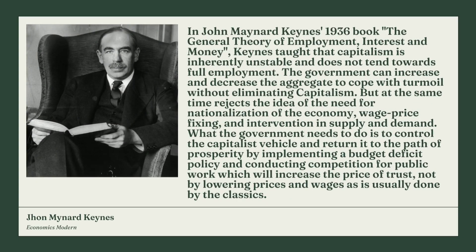In John Maynard Keynes' 1936 book, The General Theory of Employment, Interest and Money, Keynes argued that capitalism is inherently unstable and does not tend towards full employment. The government can increase and decrease aggregate demand to cope with turmoil without eliminating capitalism, but at the same time rejects the need for nationalization of the economy, price-fixing, and intervention in supply and demand. What the government needs to do is control the capitalist system and return it to prosperity by implementing a budget deficit policy and conducting public works competition, which will increase output rather than simply lowering prices as the classical economists do.